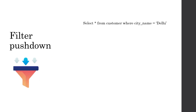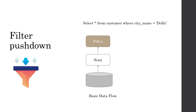First of all, let us look at what is filter push down, because this will help us understand what is pruning and how Spark does it. Let's say there is a very simple query like 'select star from customer table where city name is Delhi.' In a normal scenario, the first operation that would happen is a scan — the whole customer table would be scanned — and then a filter would be applied, which is city name equal to Delhi.